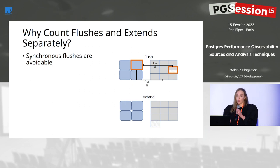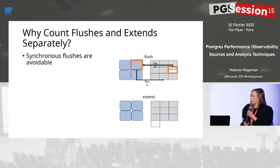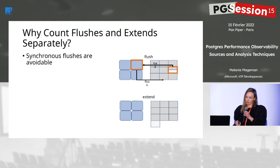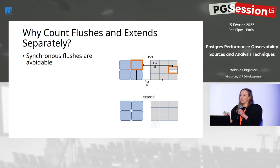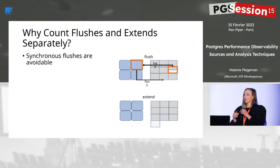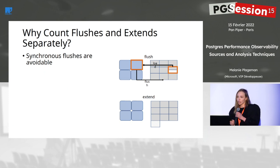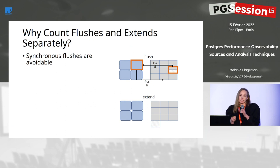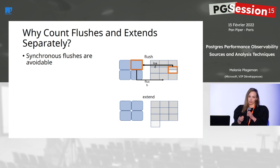So why count flushes and extends separately? Synchronous flushes are avoidable: if you tune the background writer correctly, and checkpointer plays a role, and you've sized shared buffers accordingly, ideally your working set fits in memory and you don't need to flush dirty data to read your own data into a buffer. Extends, on the other hand, are unavoidable if your data is growing. Right now, all Postgres write statistics combine extends and actual flushes, so you can't tell if the writes you're seeing are avoidable or unavoidable.